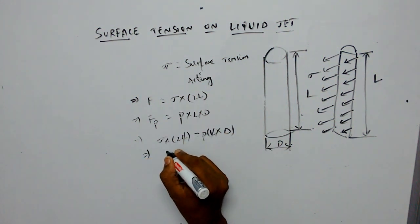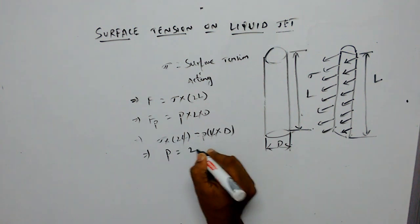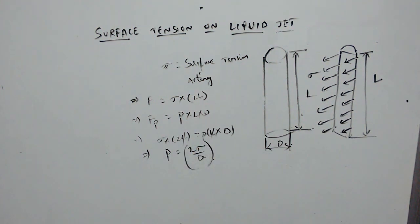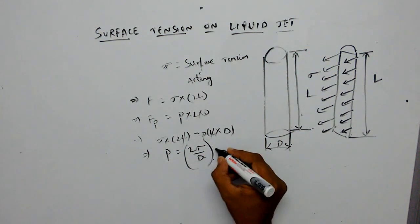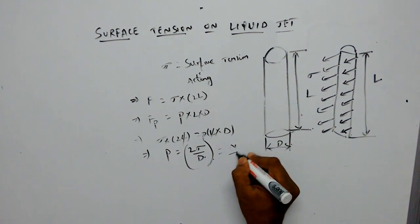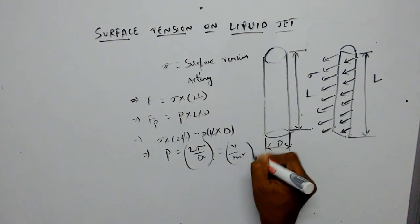Where sigma is the surface tension acting and D is the diameter. The units of surface tension are Newton per meter, and the units of pressure intensity are Newton per meter squared.